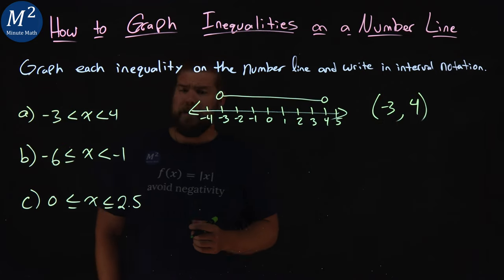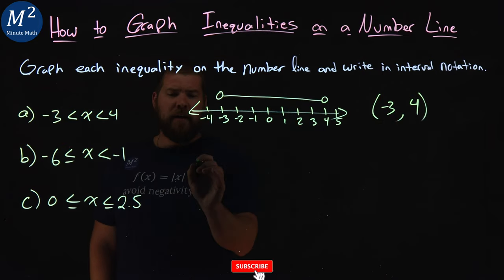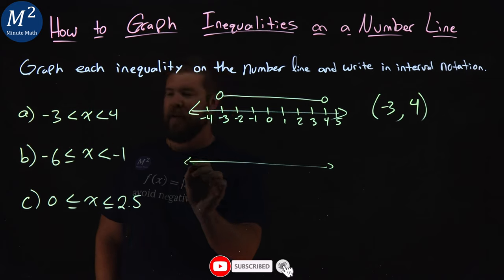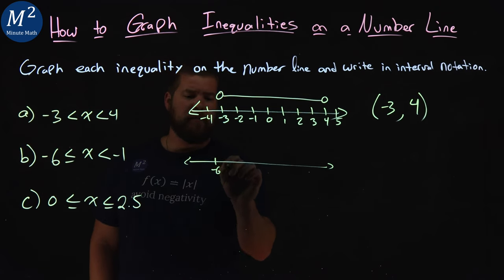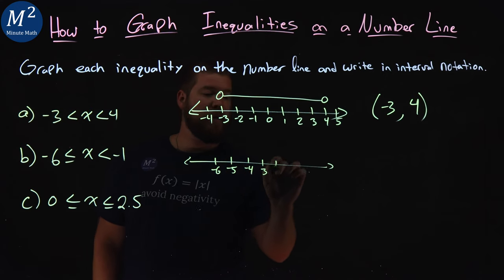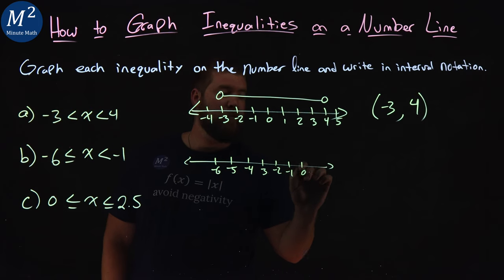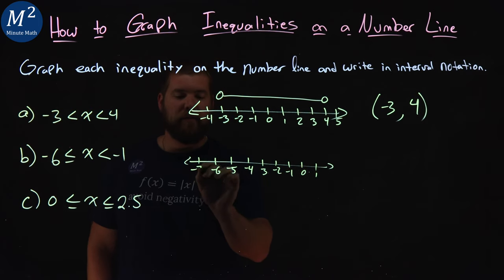Now what about the next one here? We have another number line we're going to put in here. We have negative 6 and negative 1 are the two bounds. So let's start here with negative 6, negative 5, negative 4, negative 3, negative 2, negative 1, 0, 1, and then negative 7 here.